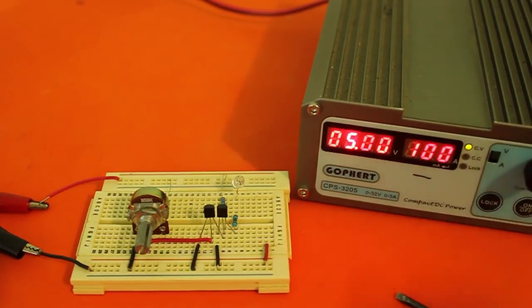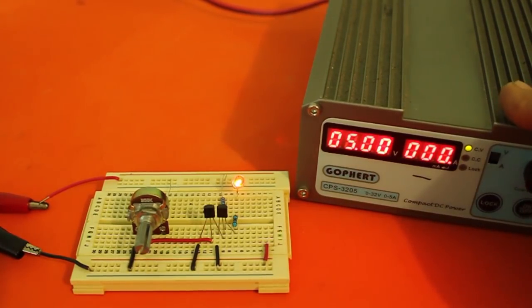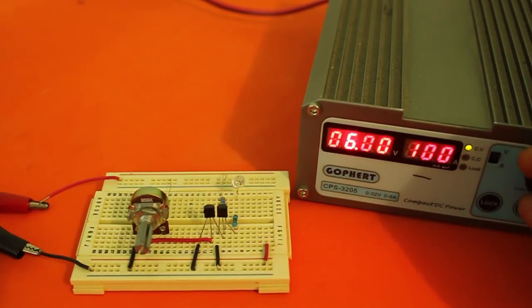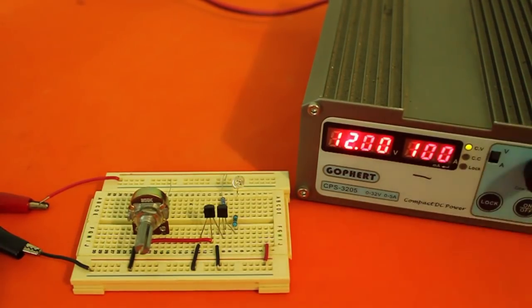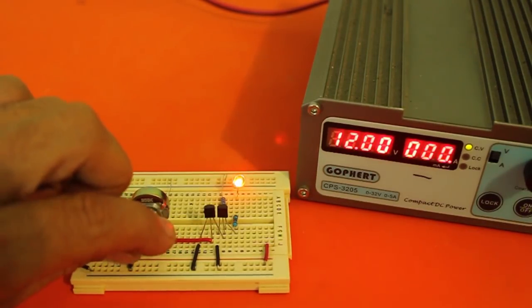Now, we can adjust the value at which the LED will turn on. For example, if I am monitoring a 12 volt battery, I adjust the potentiometer to the point where the LED turns on.